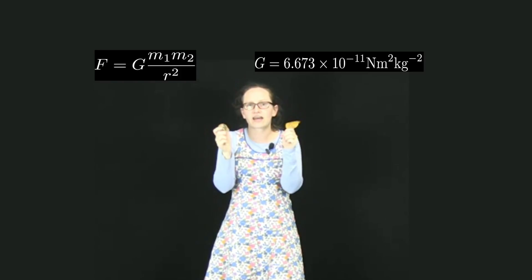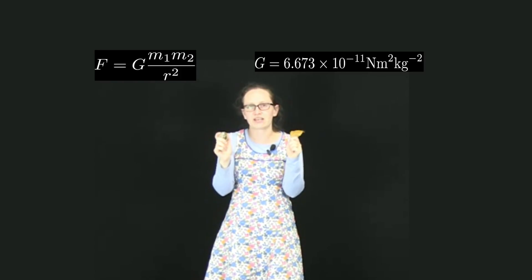Now Newton came up with the law of universal gravitation. Newton said that it's not just objects that are attracted to the Earth. Any two objects in the universe are attracted to each other caused by the mass of these objects. So Newton wrote down the law of universal gravitation.